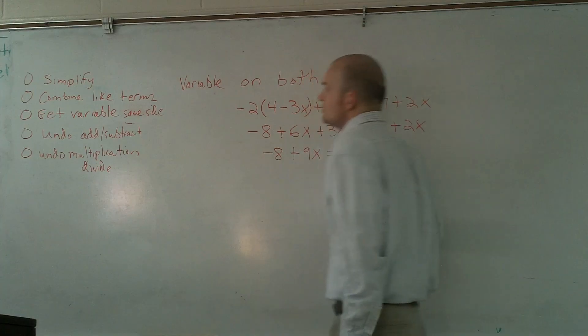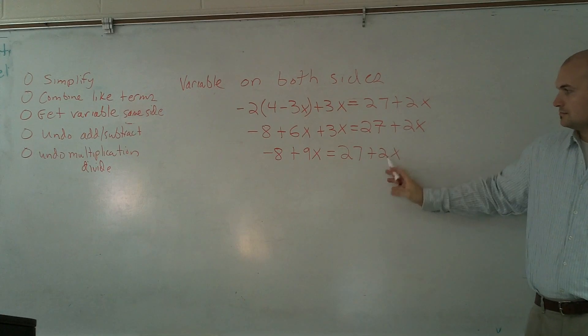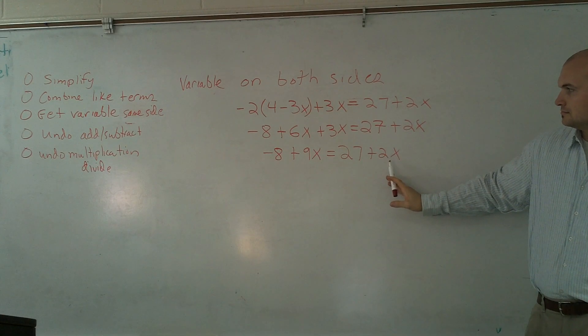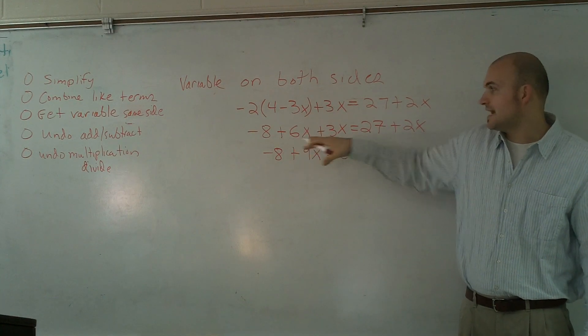Now the third step I have is get the variable on the same side. What's your question? If you can't combine the 27 with the 2 because of the x, how can we combine 6x plus 3x?